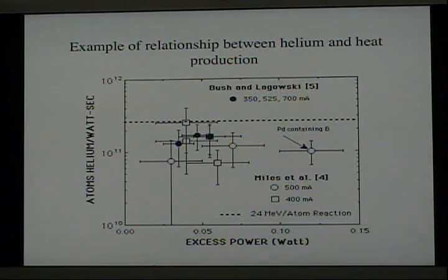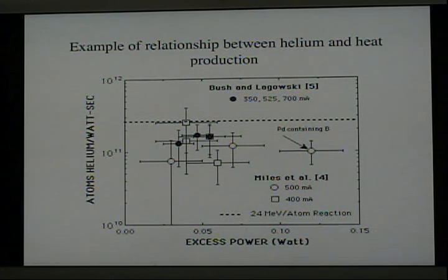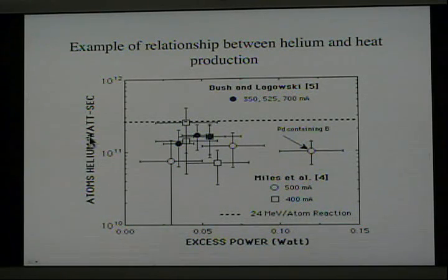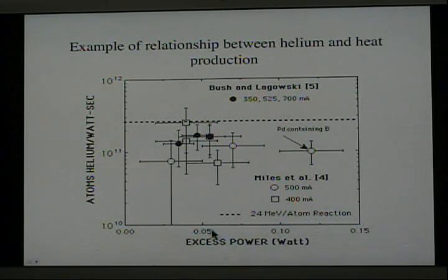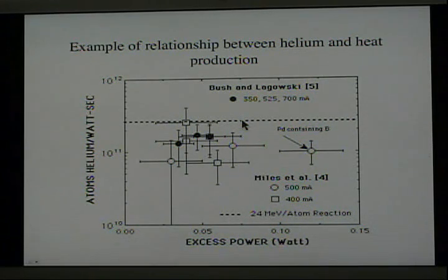If heat is produced by a nuclear reaction, then we should see nuclear products. In the case of cold fusion, the nuclear product is helium. Here we are plotting the atoms of helium divided by watt-seconds, or the amount of energy, against the excess power produced by each sample. This dashed line shows the amount of power that would be produced by a fusion reaction, that is 24 MeV per atom.